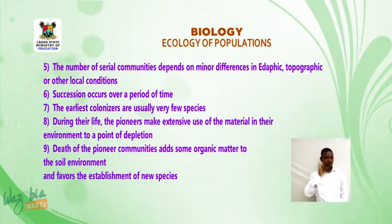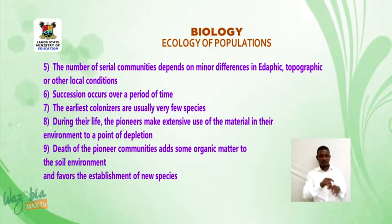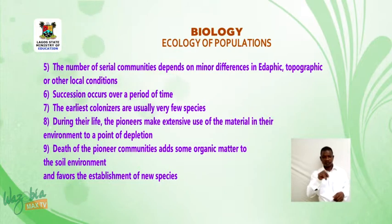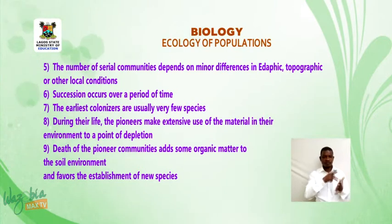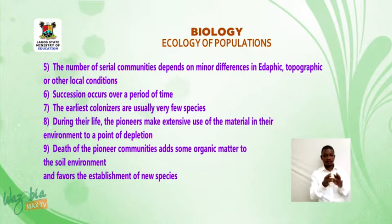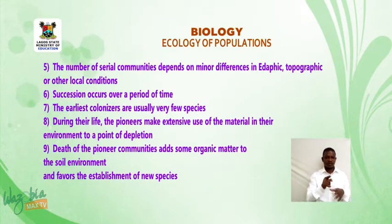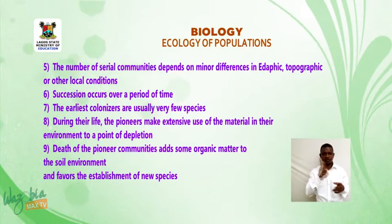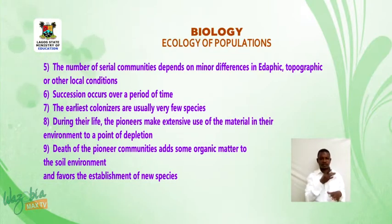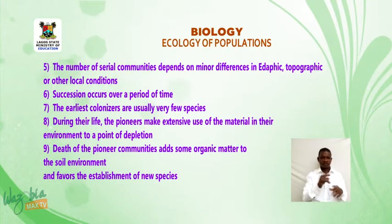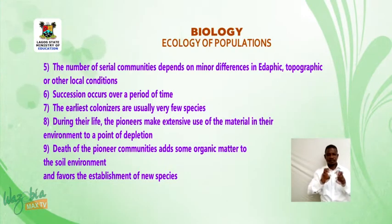Five — the number of serial communities depends on minor differences in edaphic, topographic, or other local conditions. Six — succession occurs over a period of time. Seven — the earliest colonizers are usually very few species. Eight — during their life, the pioneers make extensive use of the material in their environment to a point of depletion. Nine — death of the pioneer communities adds some organic matter to the soil and favors the establishment of new species.